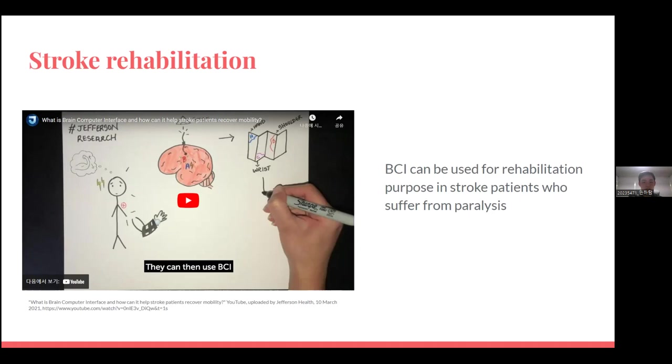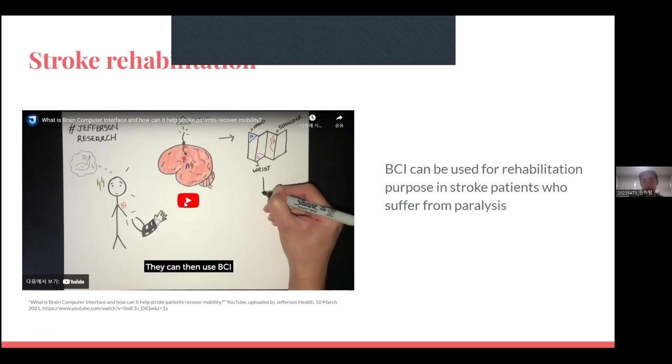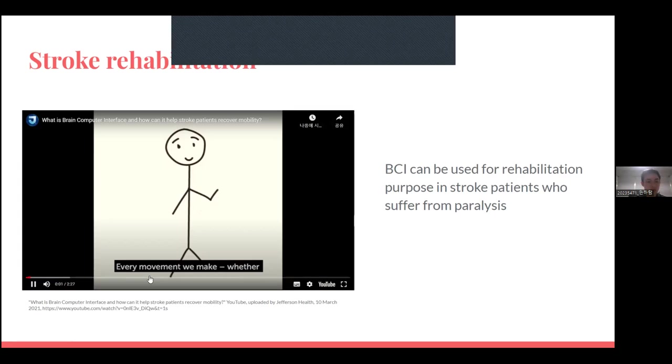BCI can be used to move a robotic arm using your thought. People with stroke have a hard time controlling their own arm. They practice arm movement with a robotic arm using their thoughts. As they do so, the connection in their brain gets reinforced to the point where they finally get to move their own arm well again. Let me show you a video.